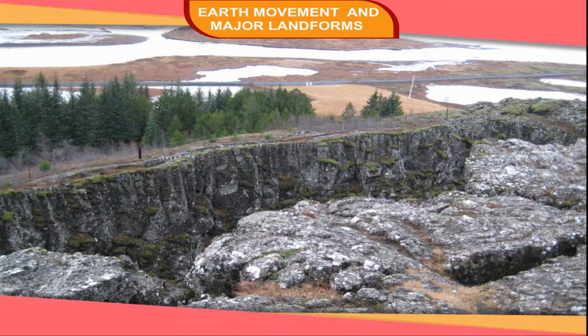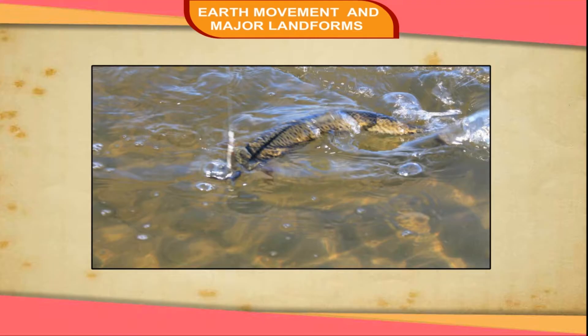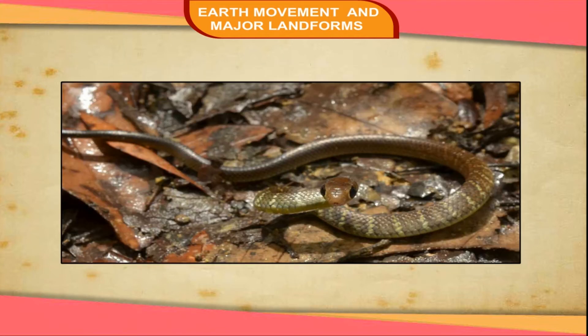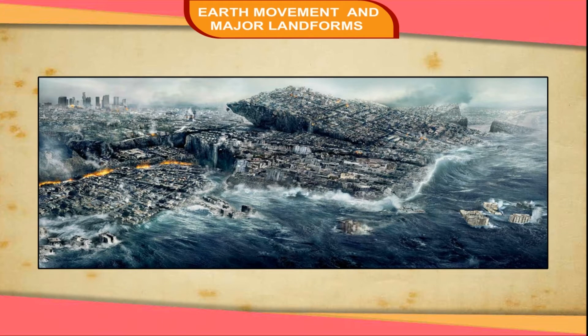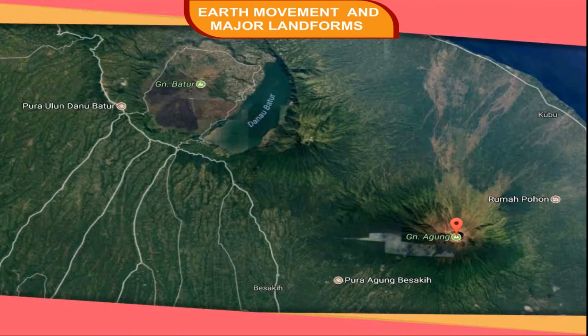Although earthquakes cannot be predicted, the impact can be minimized if we are prepared beforehand. Some common earthquake prediction methods adopted locally by people include studying animal behavior — fish in ponds get agitated and snakes come to the surface. Earthquakes are experienced in the same belts where volcanoes are situated. This is because the Earth's crust is very unstable in this region.